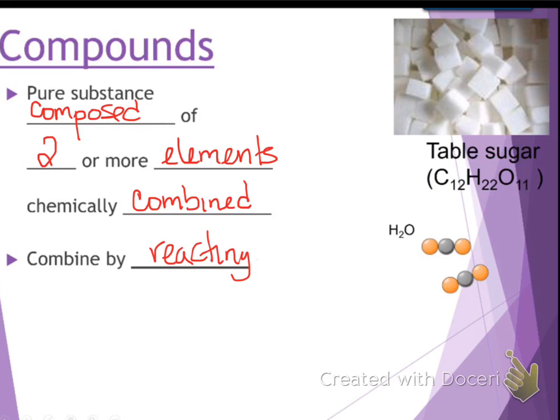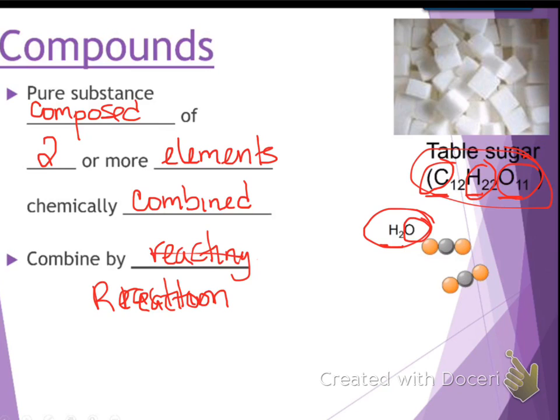Pure substances are composed of two or more elements chemically combined. Then they are combined by a reaction. So, 12 carbons, 22 hydrogens, and 11 oxygens is table sugar. It's the stuff you sprinkle in or put in your tea or sprinkle on your cereal. It's sugar. You eat it. So, that's always going to make sugar. And that's formed by a chemical reaction.